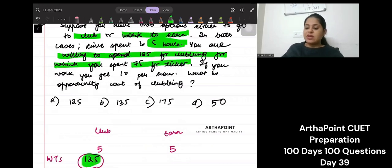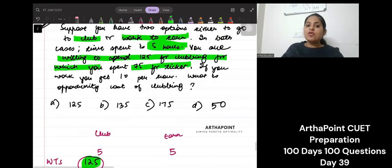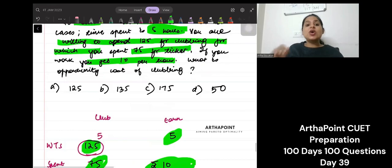But you only spend 75 for the ticket. So you actually spend just 75. If you work, you get 10 per hour. So if I work for these 5 hours, I get 10 per hour.